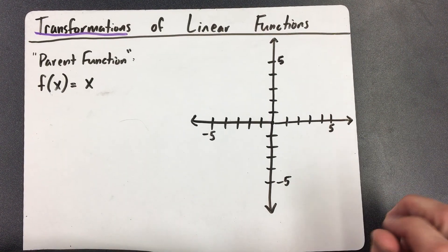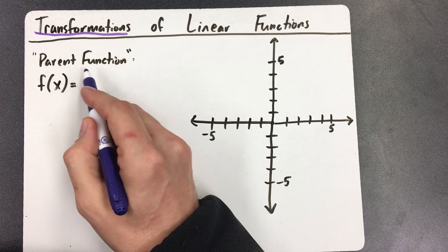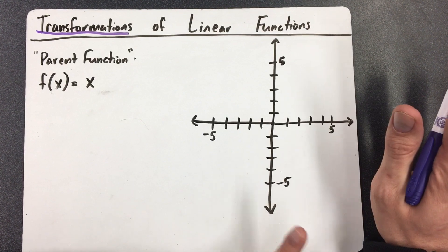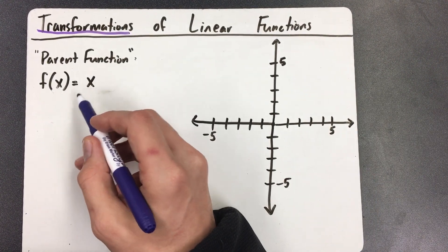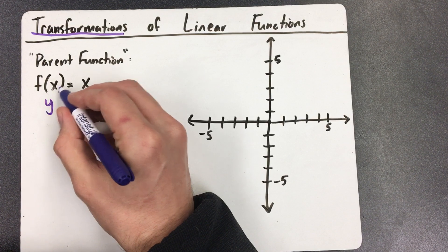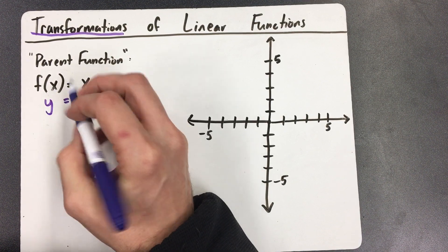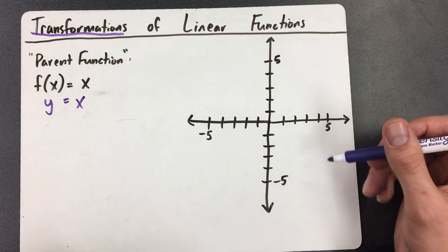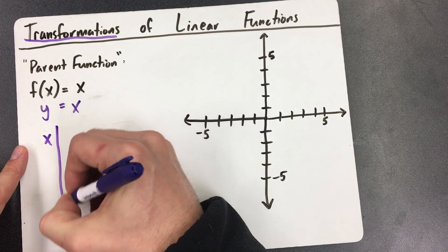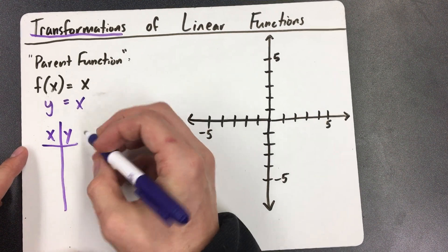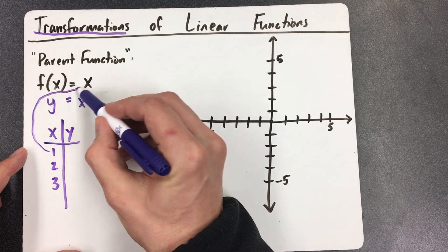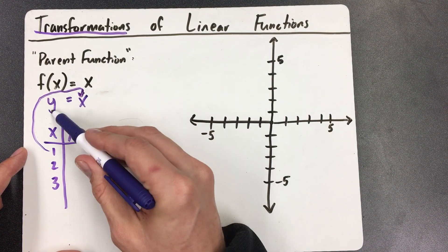Just to be consistent here, this is what they call the parent function. The parent function is like the easiest, most basic function that you can do. And in this case, f(x) equals x is the parent function. And in case you forgot, f(x) is just a fancy way of saying y, right? This is just the way to write it as a function. It's called function notation.